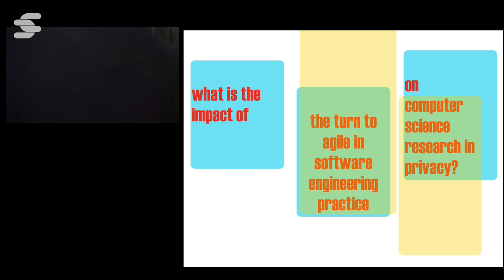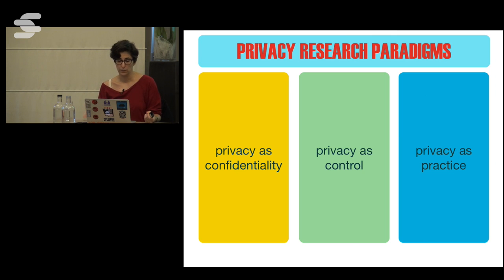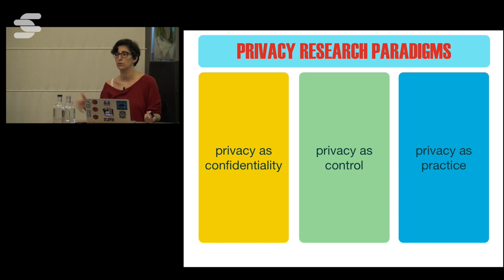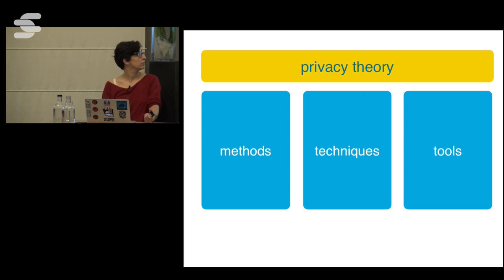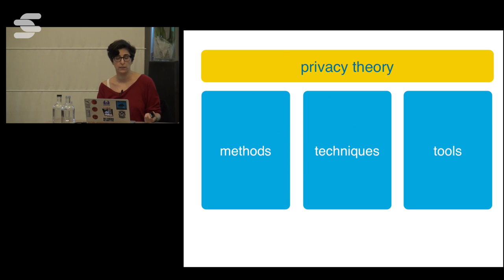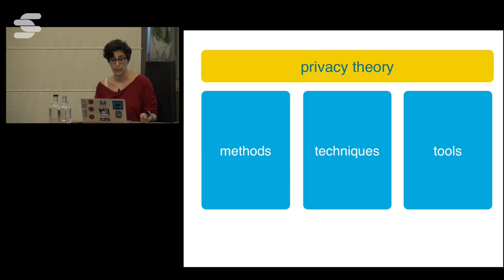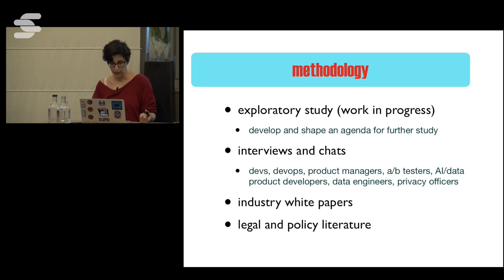To refresh from yesterday, we talked about three paradigms of computer science research on privacy. We also said we would like to promote a new field called privacy engineering, which would make it feasible to apply privacy research informed by practice in the world.